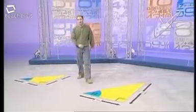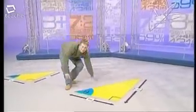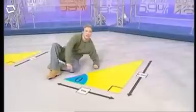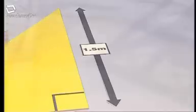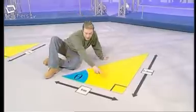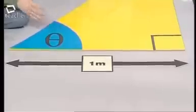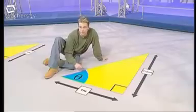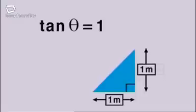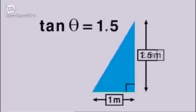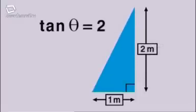So how does tan theta vary with the size of the angle? For this taller triangle, theta is bigger, and the tangent of theta is the opposite, which is one point five, divided by the adjacent, which is one. So tan theta is one point five. As the angle gets bigger, so does the value of the tangent ratio.